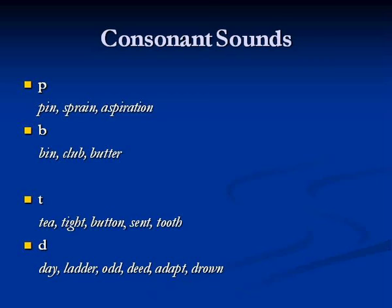The next pair: T and D. T comes from the mouth and D from the throat. T as in tea, tight, button, scent, tooth. D as in day, ladder, odd, deed, adapt, drown. The next pair: K and G. K is voiceless — it comes from the mouth, and G comes from the throat. K as in key, clock, school, king, cake, character. G as in get, giggle, gift, jargon, target.